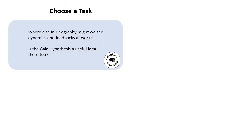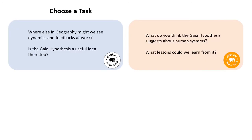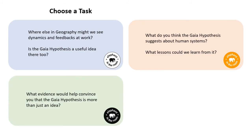So here are a few quite challenging follow-up tasks. The first two are about how you might apply the Gaia hypothesis and to think about what it says about human systems or other systems you've come across in geography. The next one is to think about the kind of evidence that might support the Gaia hypothesis. And this last one is to think about the political dimensions of this idea.